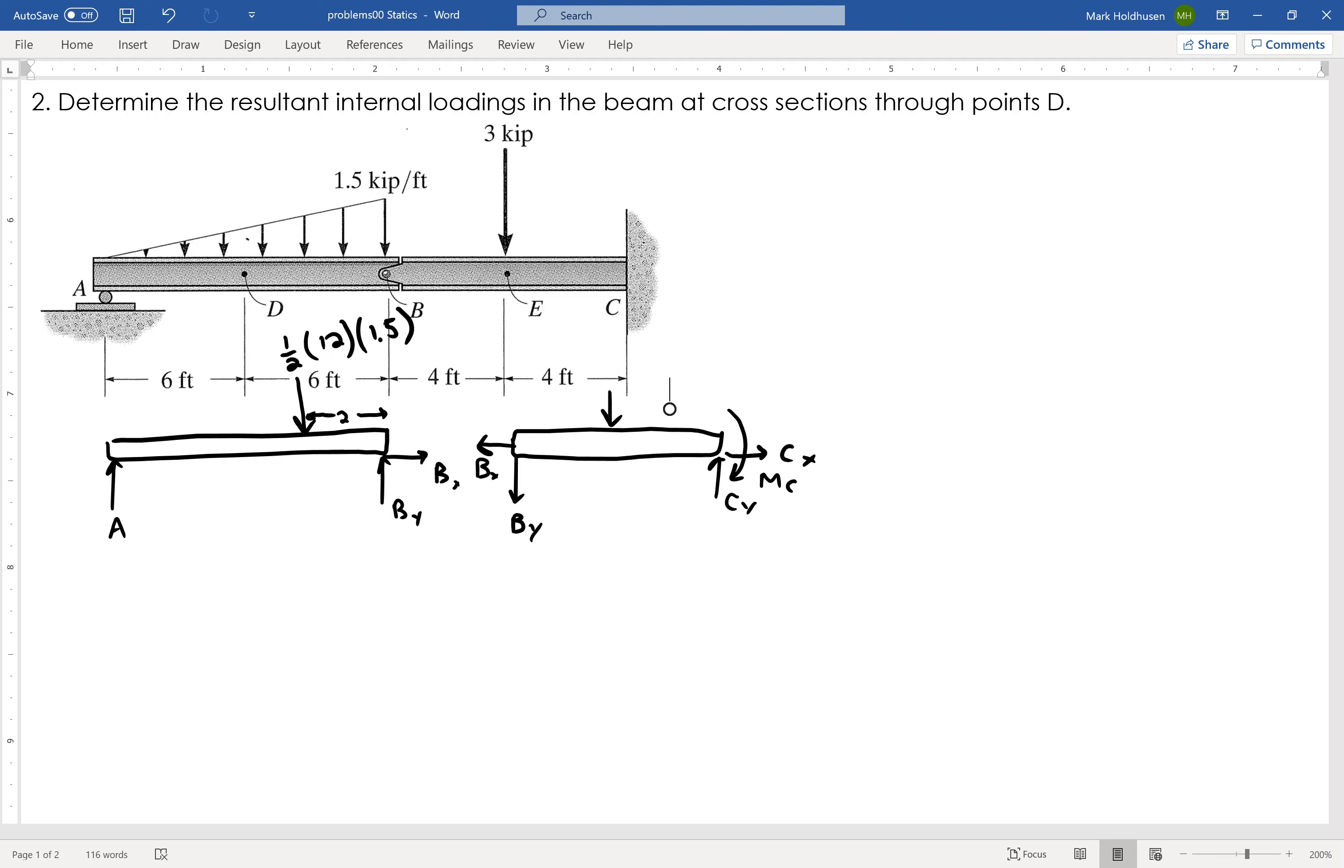Then my second piece is over here where I've got the same BX and BY. I just use Newton's third law to flip those around, right? Equal and opposite reaction, and then I've got CY, CX, and then I have basically a moment at C with a 3 right there.